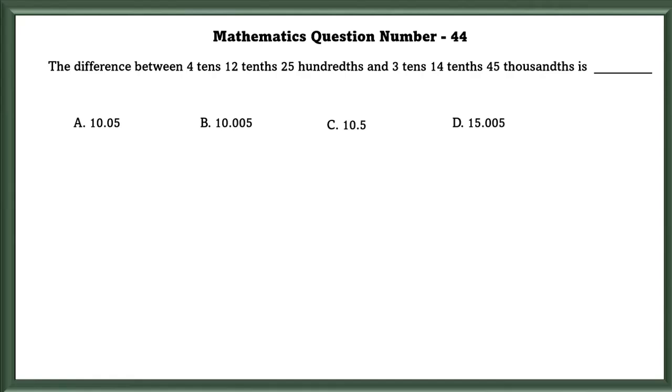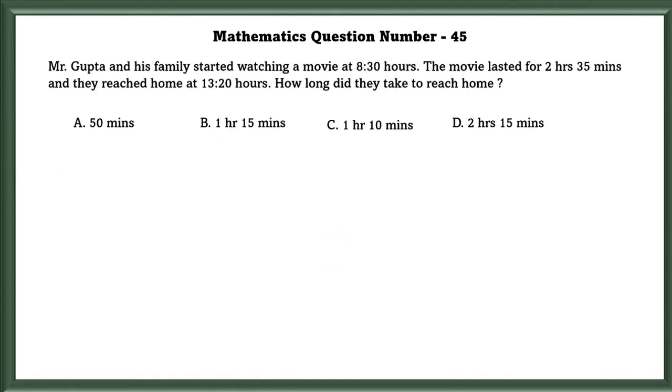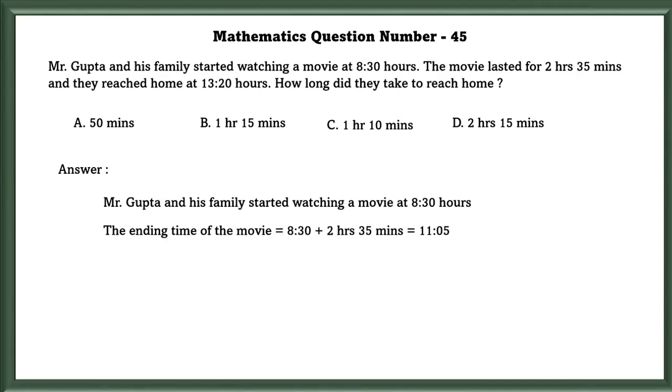Mathematics question number 44. The difference between 4 tenths, 12 tenths, 25 hundredths and 3 tenths, 14 tenths, 45 thousandths is 10.005. Mathematics question number 45. Mr. Gupta and his family started watching a movie at 8:30 hours. The movie lasted for 2 hours 35 minutes and they reached home at 13:20 hours. How long did it take for them to reach home? Mr. Gupta and his family started watching a movie at 8:30 hours. The ending time of the movie is equal to 8:30 plus 2 hours 35 minutes, that is the duration of the movie, which is equal to 11:05. Time taken to reach home is equal to 13:20 minus 11:05, which is equal to 2 hours 15 minutes.